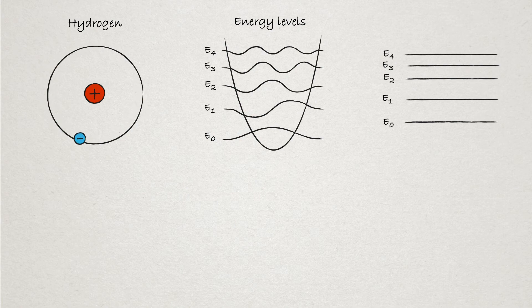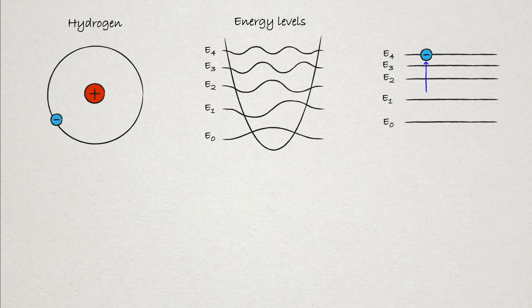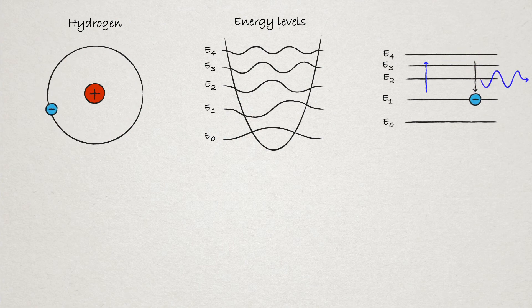When light comes in and interacts with the electron, if the energy of the light is the same as an accessible energy gap, then the electron can absorb this energy and move up toward an excited state. As there are only so many states, there is a limited number of wavelengths the electron can absorb. We can determine what wavelengths an atom can absorb either by shining light through it as a gas and measuring the absorption, or we can heat the atoms up, and once they get hot enough, they'll start to emit these same wavelengths when the electrons drop from a higher energy state to a lower energy state.